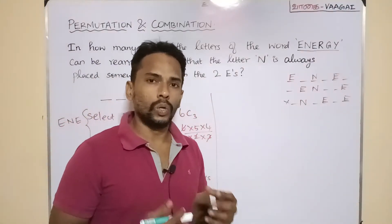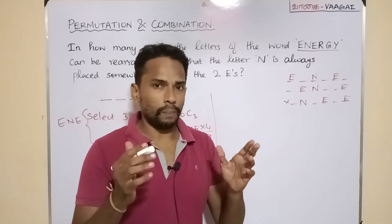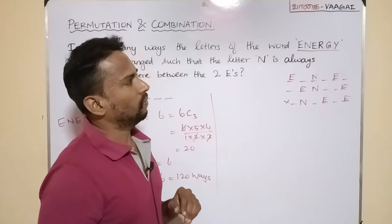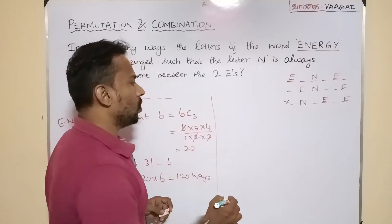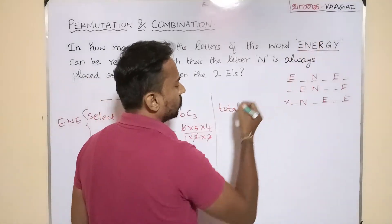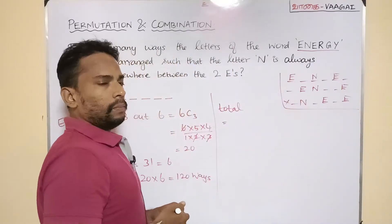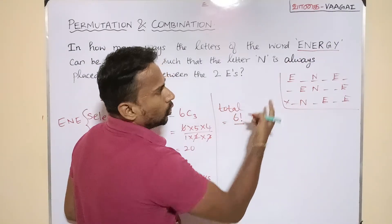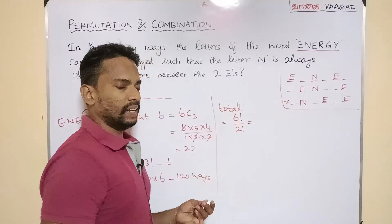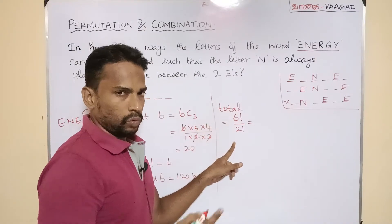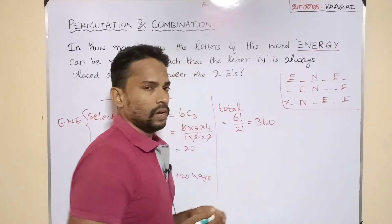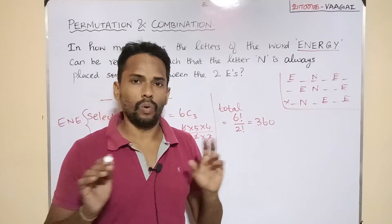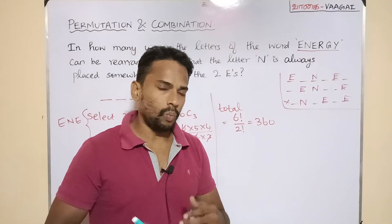That's one approach. There is another approach using some logic. Let's go back to our original word ENERGY. First, think about the total number of ways to arrange the letters of ENERGY without any restriction. There are six letters, but two E's are identical, so the total is 6!/2! = 720/2 = 360 ways.